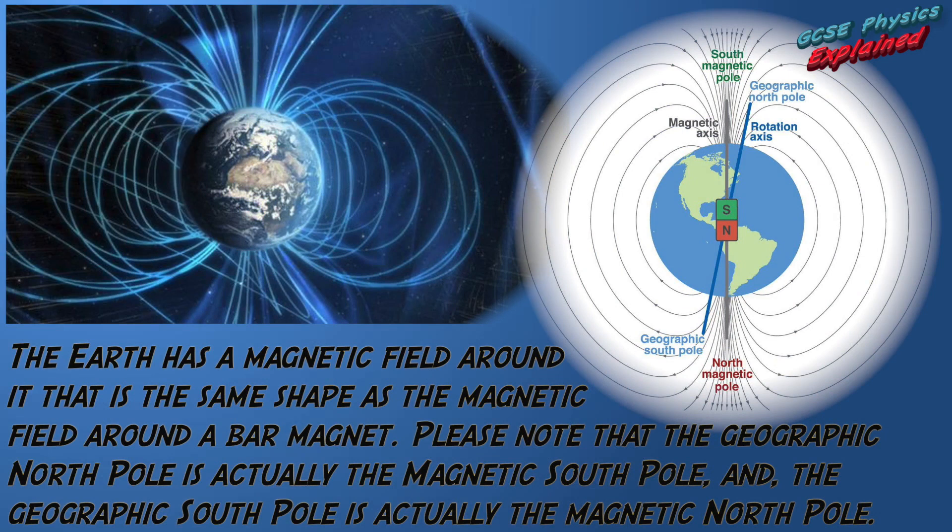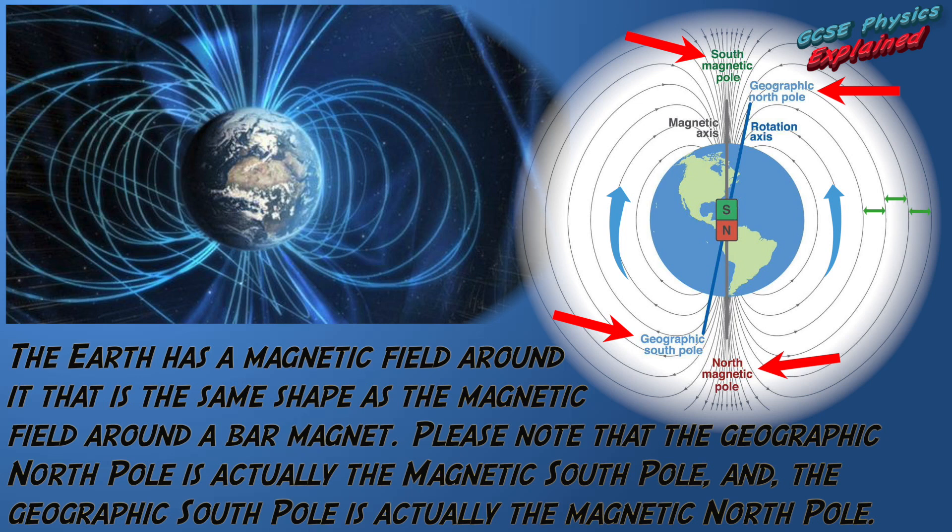The Earth has a magnetic field around it that is the same shape as the magnetic field around a bar magnet. Please note that the geographic North Pole is actually the magnetic South Pole, and the geographic South Pole is actually the magnetic North Pole. Look closely at the direction of the field lines on the diagram. Please also note that the field lines should not be equidistant apart on the diagram on the right. The diagram on the left, showing the field lines getting further apart as you get further away from the Earth, just like it does on the bar magnet, is correct.